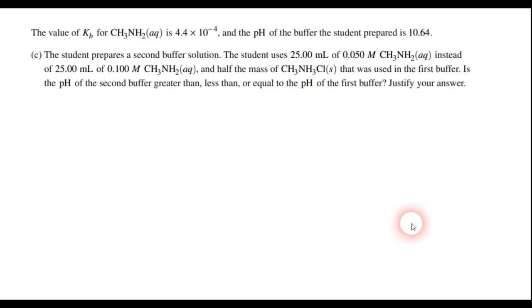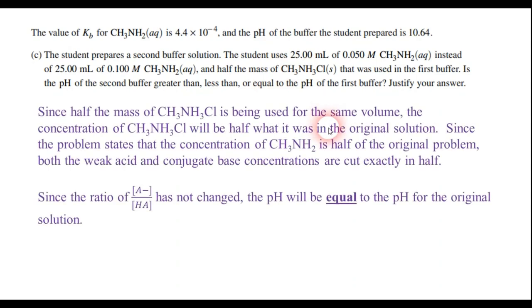On the last part of the question, we have a different buffer solution. And notice that it's different from the first one. Instead of the original 0.1 molar methylamine, the student uses half of that concentration, 0.05 molar. And the acid, the conjugate acid concentration, or I should say the conjugate acid mass is half what it was before. So that tells me that the concentration of the base is half what it was before. The concentration of the conjugate acid is going to be half what it was before. So that tells me that both the weak acid and conjugate base concentrations are cut exactly in half. And according to the Henderson-Hasselbalch equation...